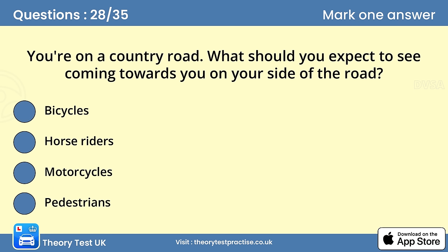Question 28. You're on a country road. What should you expect to see coming towards you on your side of the road? The answer is D: Pedestrians. On a quiet country road, always be aware that there may be a hazard just around the next bend, such as a slow-moving vehicle or pedestrians. There might not be a pavement, and people may be walking on your side of the road.